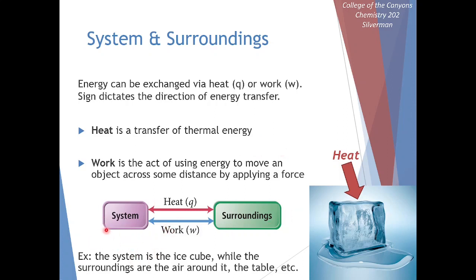We can look at this graphic. Our system is whatever we define it as — maybe in this case it's our ice cube. Our surroundings might be just the air and table surrounding this ice cube. If this is a room-temperature table with room-temperature air, our system, the ice cube, will absorb energy from the surroundings. We'll have heat exchanged from the surroundings into the ice cube, starting to melt it. This process of melting is endothermic, absorbing heat from the surroundings.